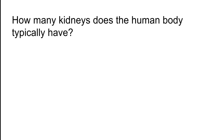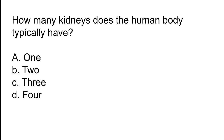How many kidneys does the human body typically have? Options: A) One, B) Two, C) Three, D) Four. The correct answer is option B. The human body typically has two kidneys.